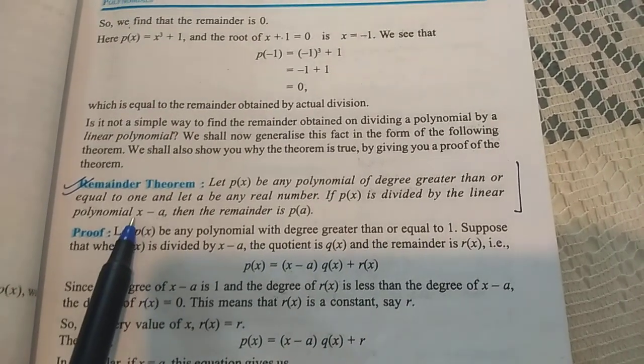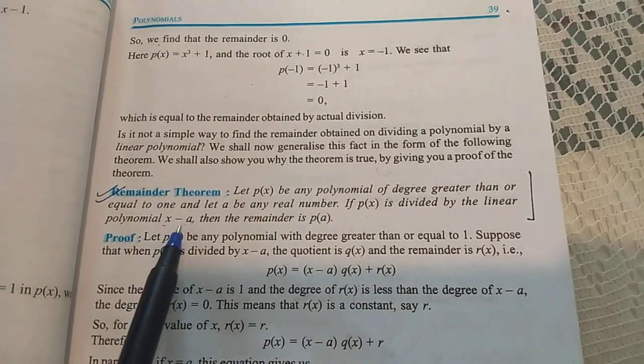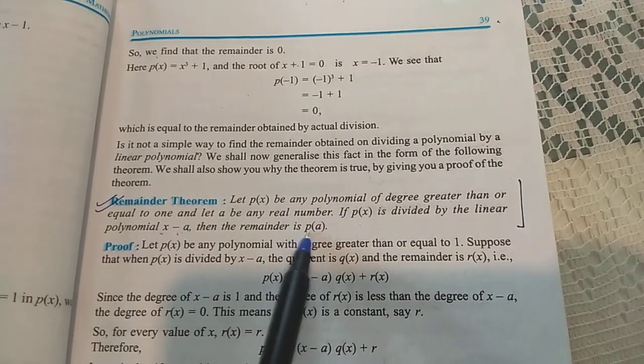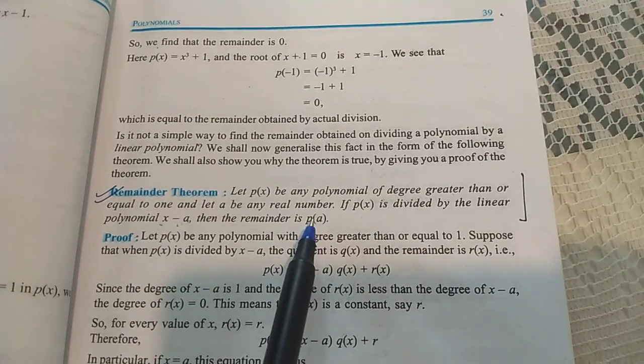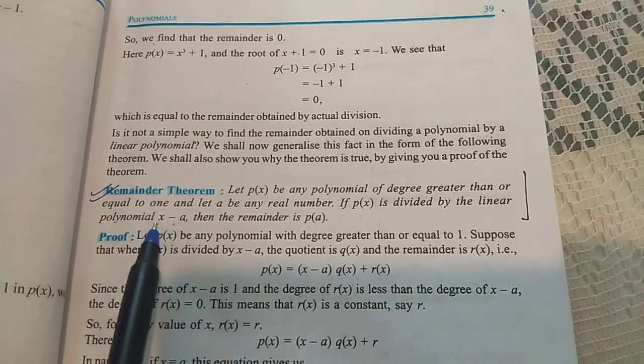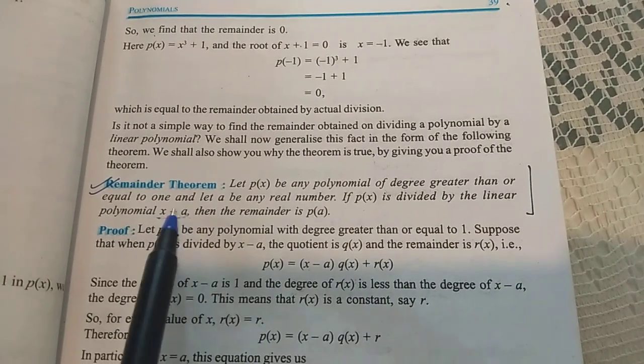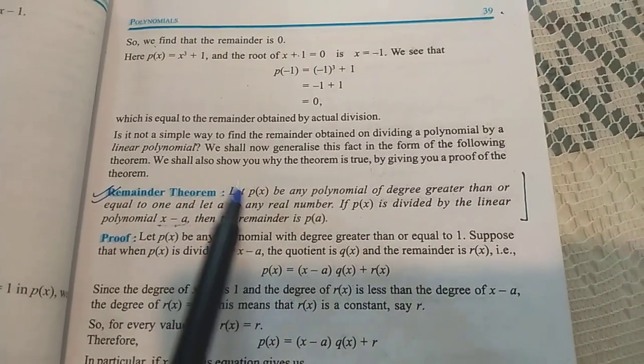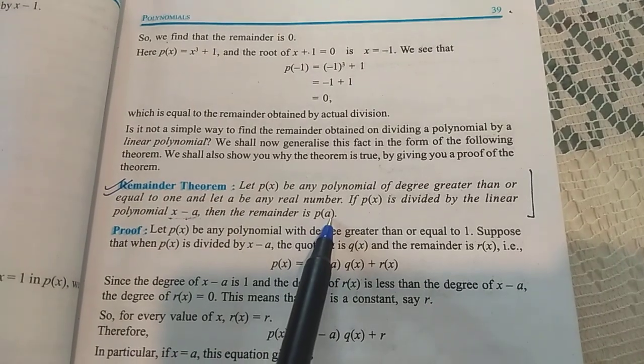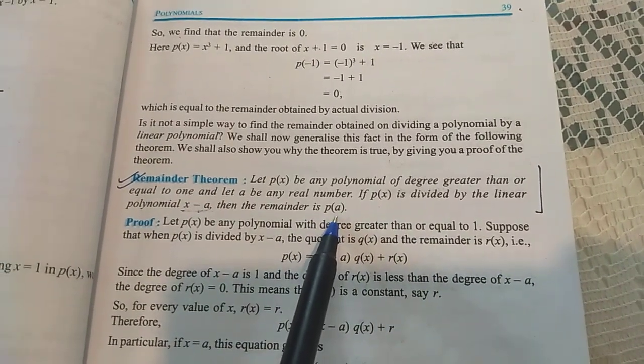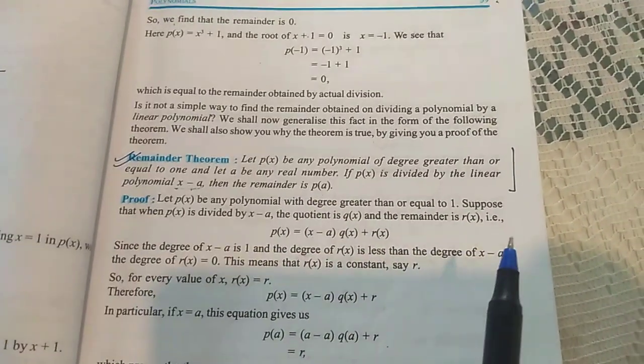So if it is divided by a linear polynomial of type x - a, then the remainder is given by p(a). Here how to get this remainder: you find the zero of the divisor, zero at a, and put the value of a here. So p(a) becomes the remainder. I hope the remainder theorem is clear to you. Thank you.